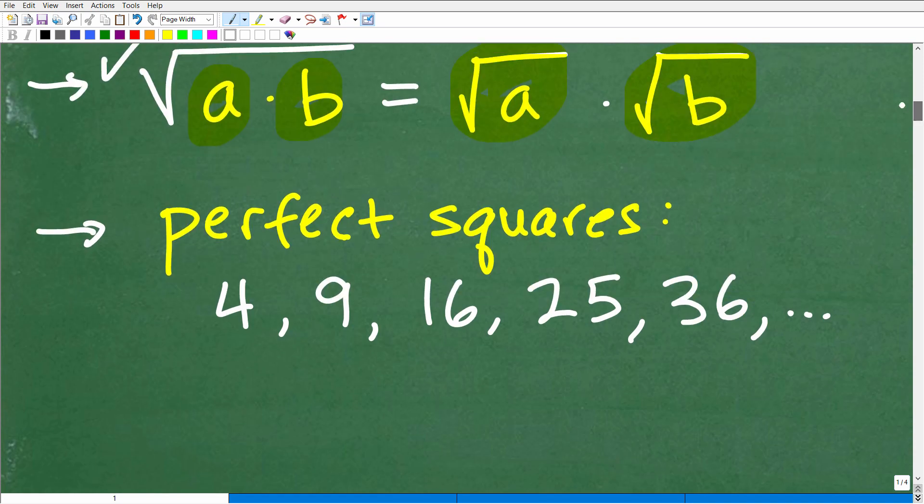So we're going to need to know this property to do this problem. And then you're going to want to know something about what we call perfect square factors. So remember, we're going to be looking to factor this number 1,000. But when we're factoring a number that we're trying to simplify in terms of a square root, we want to be especially on the lookout for these numbers here. They're called perfect squares.